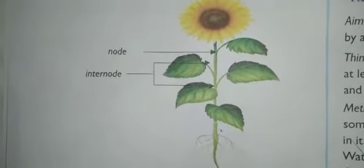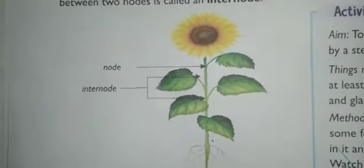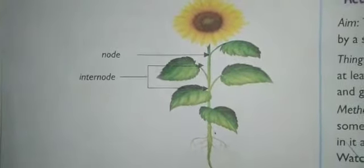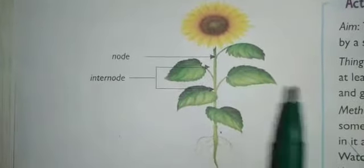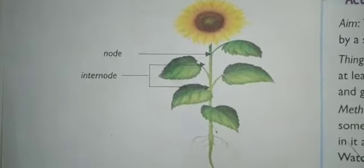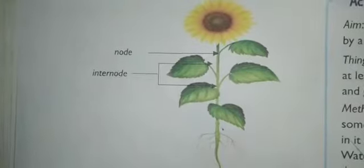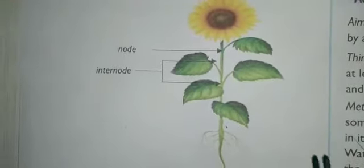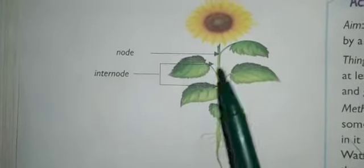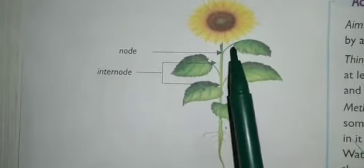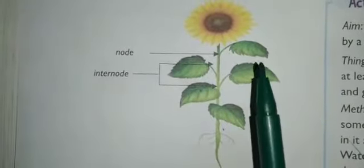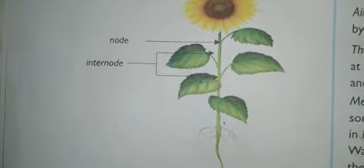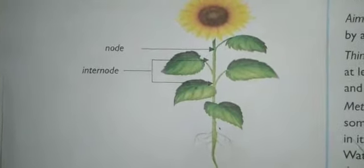Coming to the stem — the stem is a major part of the plant. The stem bears branches, leaves, flowers, and fruits. The leaves on the branches are arranged in such a way that they are exposed to maximum light, because they need to absorb maximum sunlight.